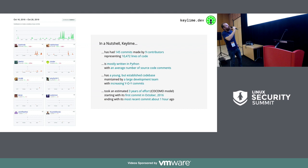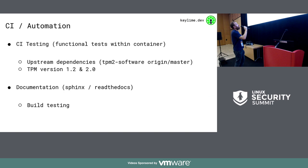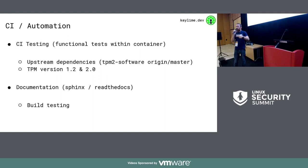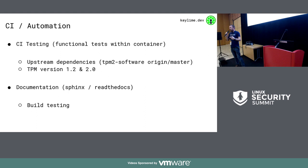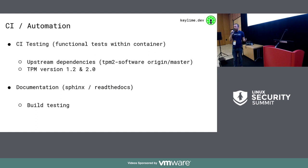This is GitHub metrics pulled by another tool — you can see increasing year-on-year commits. We're a young but established code base considered a large development team. The first commit was made by MIT in October 2016. Since getting involved I've helped port the code from Python 2 to Python 3, moved it from TPM 1.2 to 2.0, set up CI testing — we instantiate a container with a TPM emulator and run functional tests to mimic an attestation. We also use code quality tooling for lint checks and have documentation in place.